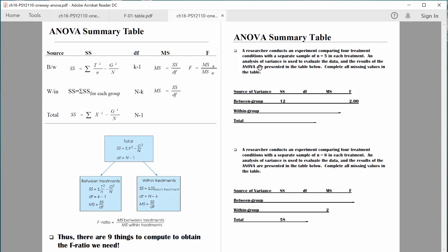So let's read and see what we have here. It says a researcher conducts an experiment comparing four treatment conditions with a separate sample of N equals 5 in each treatment. So we know we have four groups, K equals 4. We have 5 people in each group. 4 groups times 5 people equals 20 people overall. So we know the big N equals 20. You see how already I'm getting a lot of information just by reading this little bit of information.